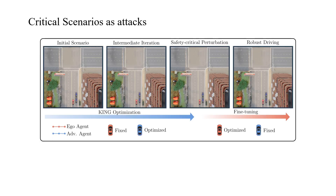Instead, safety-critical scenarios can be generated automatically by framing this task as an optimization problem from the perspective of adversarial attacks. Starting from an initial, non-critical situation, we iteratively re-simulate and perturb the scenario with the driving agent under test in closed loop. In each iteration, we adjust the scenario's parameters — in this case the trajectories of other agents — to make the scenario more challenging for the driving agent.